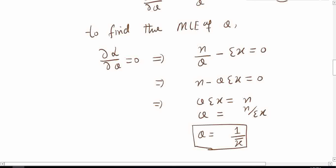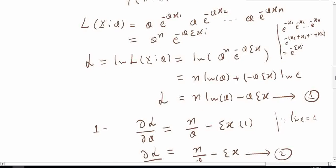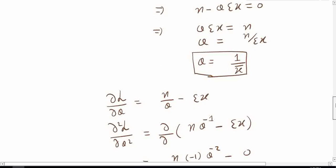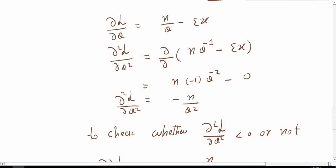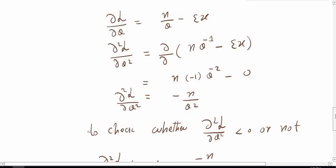At this point we can say the slope of the likelihood function is zero, but we are not sure whether it is a maximum or minimum point. For this purpose we need to calculate the second partial derivative. We take the second derivative of the log-likelihood with respect to theta. Writing the first derivative as n times theta to the power minus 1 minus summation x, the derivative gives n times minus 1 times theta to the power minus 2. Since summation x is constant, its derivative is zero. So the second derivative is minus n divided by theta squared.